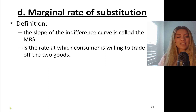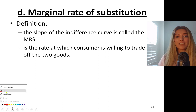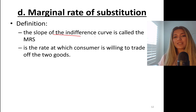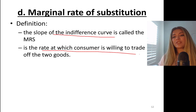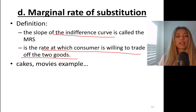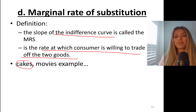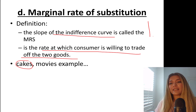Marginal rate of substitution is the slope of the indifference curve, and also it's the rate at which a consumer is willing to trade off the two goods. So in the cakes and movies example, we had cakes on the y-axis and movies on the x-axis.